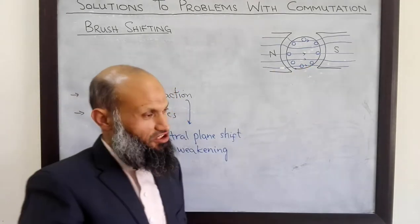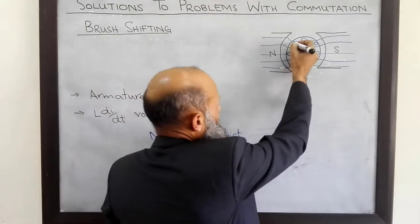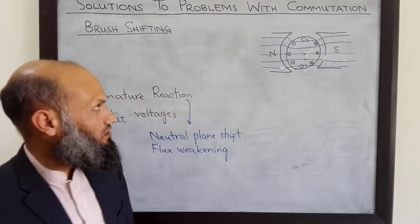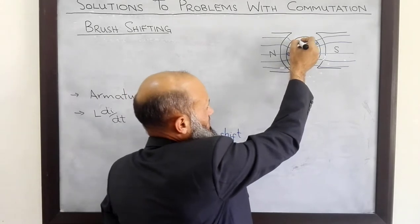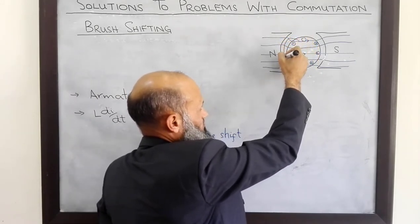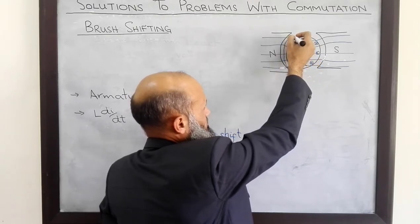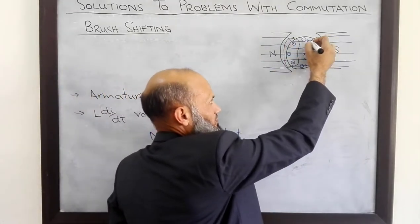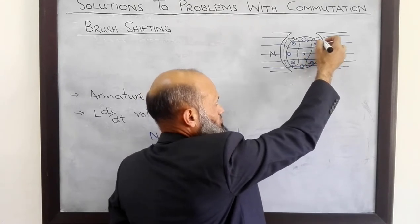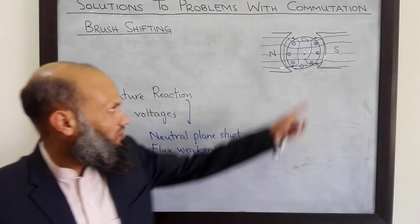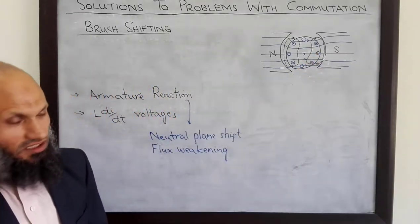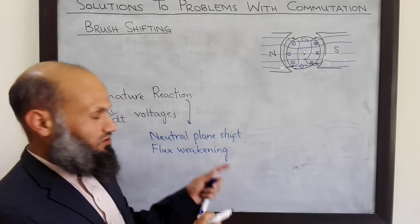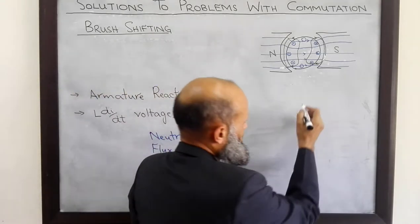However, when load is connected to the machine, current starts flowing in the coils. There is a magnetic field and MMF due to current in these coils, shown by these lines. These are the flux lines due to current in these coils. So now there are two magnetic fields, and the interaction of these two magnetic fields distorts the magnetic field around the surface of the rotor in this DC machine. That distortion is shown in this diagram.